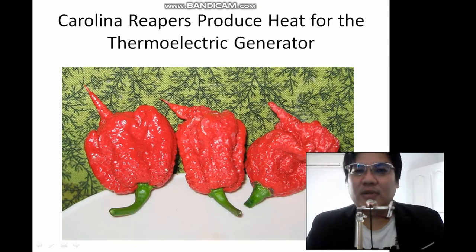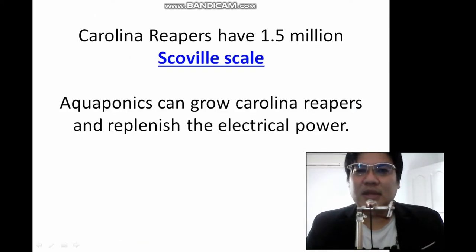What do you use? You use Carolina Reapers to produce heat for the Thermoelectric Generator. It has 1.5 million Scoville scale. You can use aquaponics to grow the Reapers that permit the electrical power, which shall be stored into batteries.